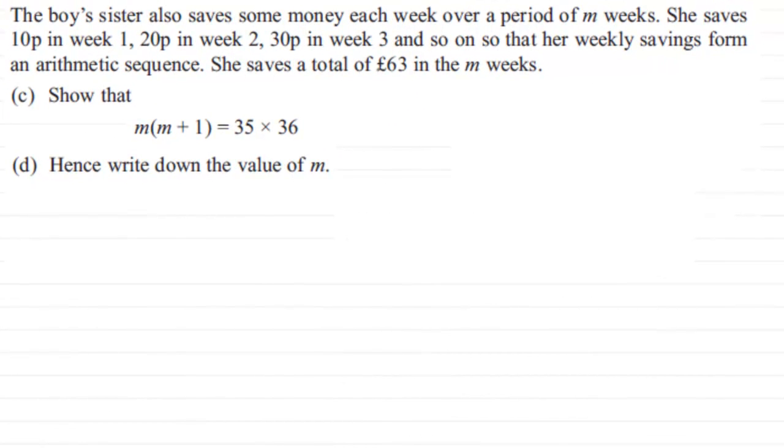Hi. Now for the last parts of this question, we're told that the boy's sister also saves money each week over a period of m weeks, and she saves 10p in week 1, 20p in week 2, 30p in week 3, and so on, so that her weekly savings form an arithmetic sequence. She saves a total of £63 in the m weeks.